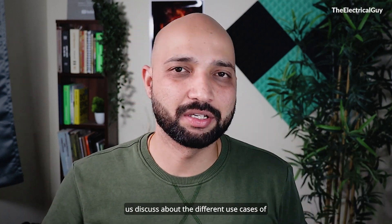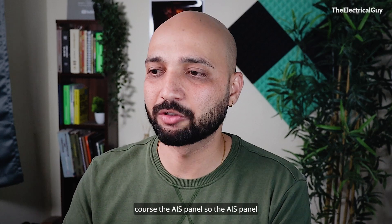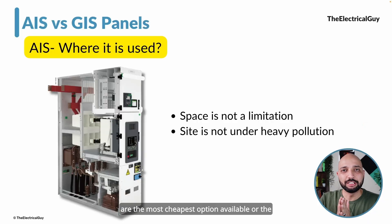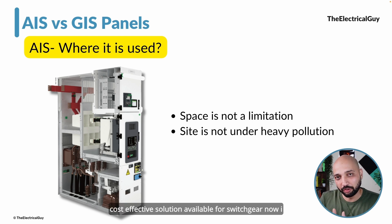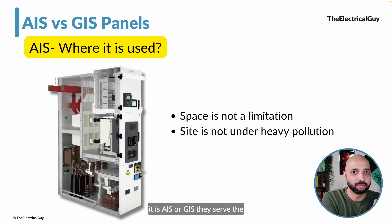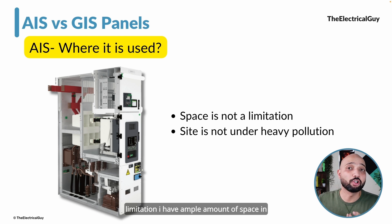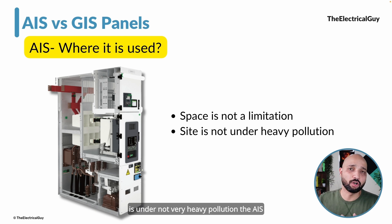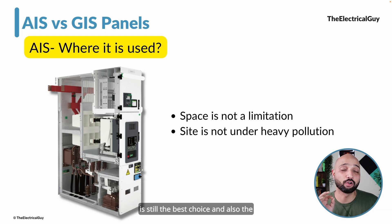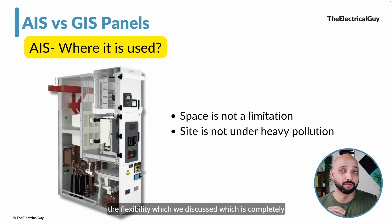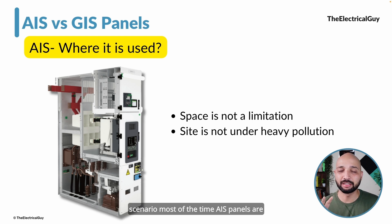Now let us discuss different use cases. AIS panels are the most cost-effective switchgear solution. Both AIS and GIS serve the same purpose — the difference lies in the technology used. Where space is not a limitation and the site is not under very heavy pollution, AIS is still the best and most cost-effective choice. It also offers flexibility — such as withdrawable components — which is absent in GIS. In such scenarios, AIS panels are mostly preferred.